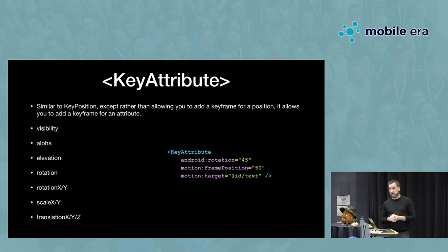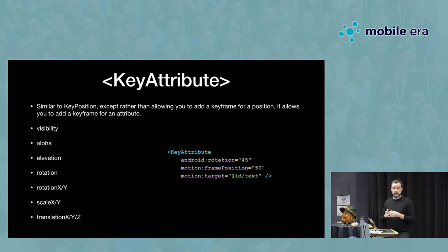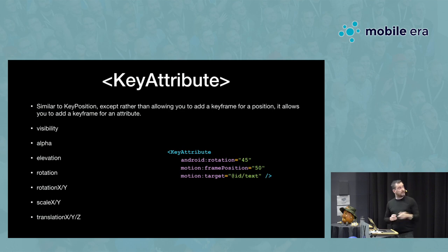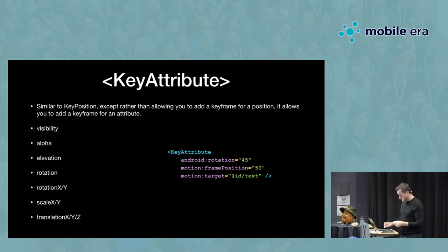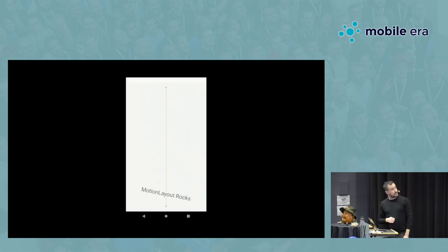That's pretty much all there is to do with paths. Next I want to cover key attributes. As well as changing things related to the path a widget takes, you can also change attributes of the widget itself. Here's the list: visibility, alpha, rotation, scale. In this example, we've got a rotation of 45 degrees — halfway through the animation we're going to rotate the text 45 degrees, and it interpolates the rotation between the two points.